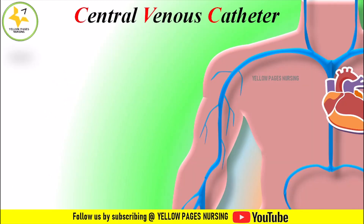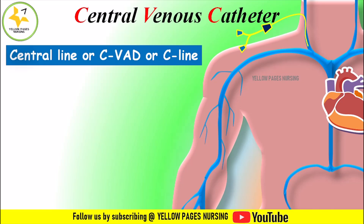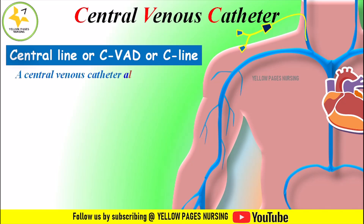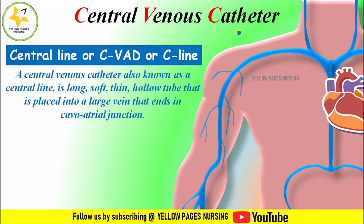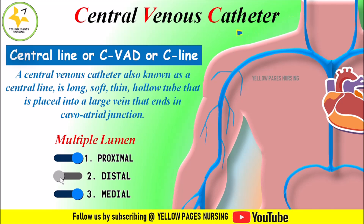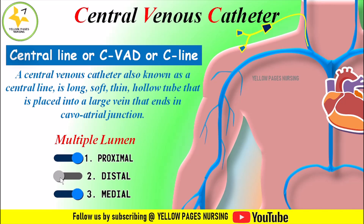A central venous catheter, otherwise called a central line or CVD or C-line, is a long, soft, thin, hollow tube that is placed into a large vein that ends at the cavoatrial junction. A central venous catheter has multiple lumens named proximal, distal, and medial, and is mainly used for administration of high-risk medications, inotropes, chemotherapy, or total parenteral nutrition.